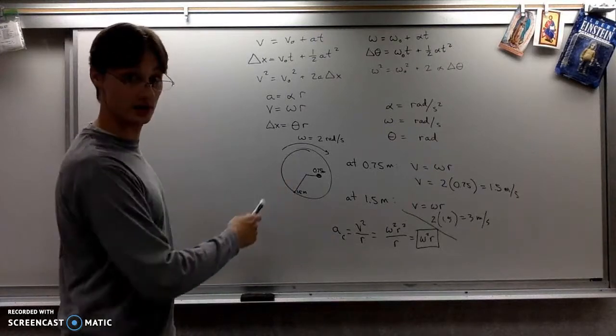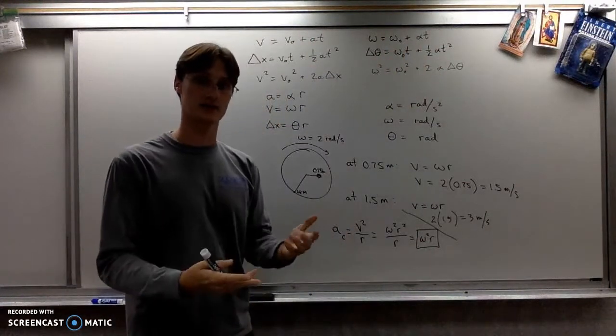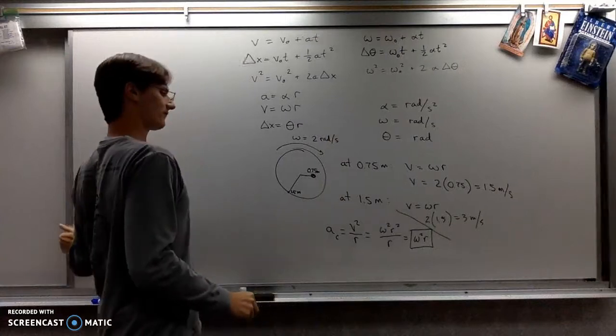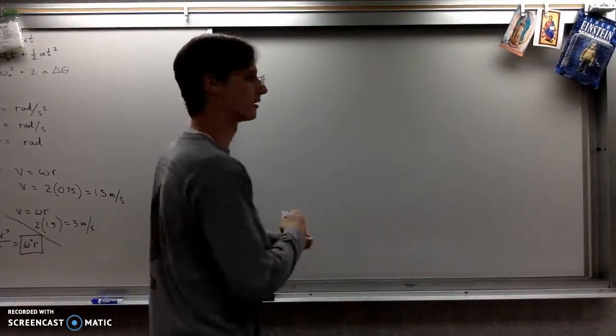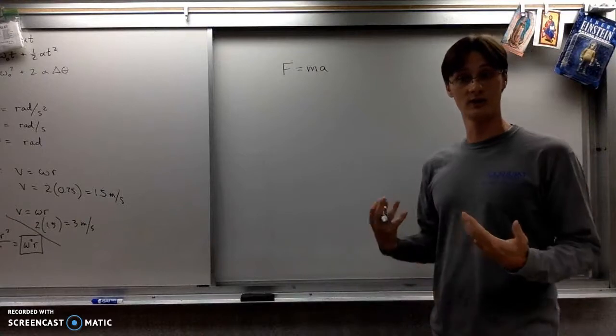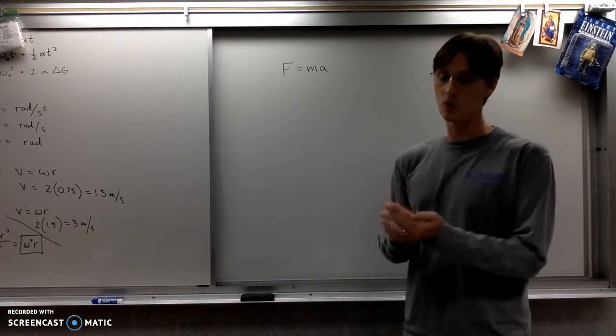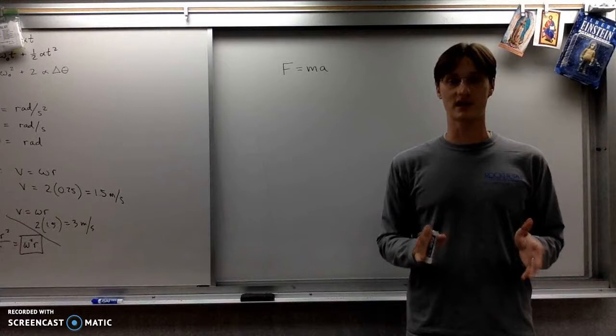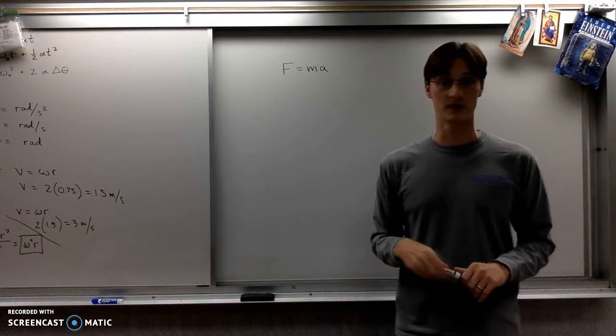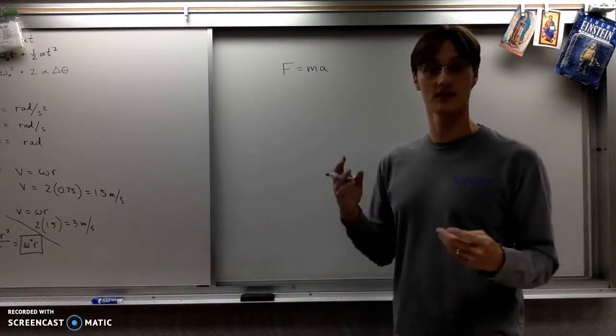We said moments ago that every linear quantity has a rotational analog. Analog meaning this thing is analogous to that other one - this one is like that one. So, this formula, F equals MA, has a rotational analog. Instead of force, we talk about torque. If you want to make something spin in the first place, you obviously have to apply a force to it. But you can't apply a force just anywhere on it and imagine that it's going to rotate. So when we talk about the rotational analog of force, it's torque.